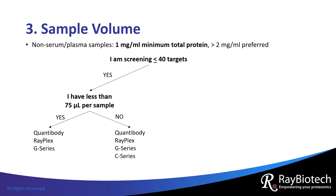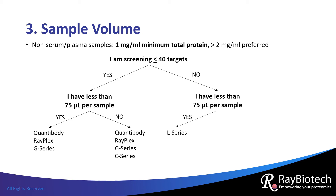If you are screening more than 40 targets at a time and have less than 75 microliters, then the L series array may be appropriate. If you have more than 75 microliters, then you could also use Quantibody, Rayplex, G series, and C series arrays.